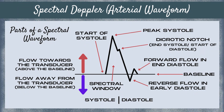Then the waveform goes above the baseline again, representing a small amount of forward flow in end diastole. Note that above the baseline the flow is towards the transducer and below the baseline the flow is away from the transducer. It's important to look at the velocity scale on your spectral Doppler map to ensure that positive velocities are set above the baseline and negative velocities below, so that your spectral waveform map is not inverted.